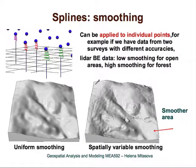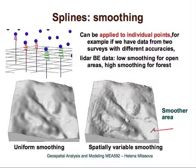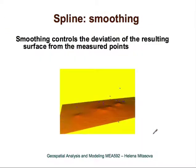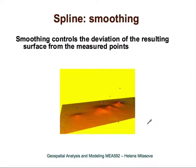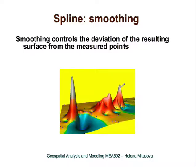For example, we want to preserve every little detail for points in one area, so we apply lower smoothing to those points, and we want to make another area really smooth, so we apply higher smoothing. The animation shows that with smoothing we are really deviating from the data points. As smoothing increases, the surface approaches the trend — which is almost a plain — and we no longer require the function to pass through the data points.